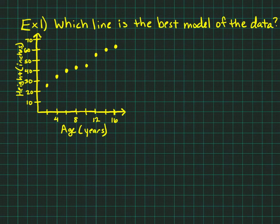Example one, which line is the best model of the data? We're not given the entire problem yet, but usually on a problem like this, you might see it in a multiple choice format, where you're given a scatter plot,